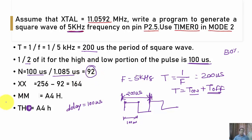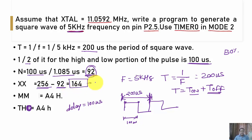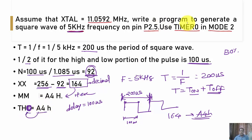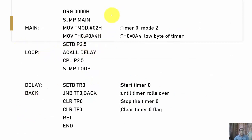Step 2: subtract N from 256 — 256 − 92 = 164 (decimal). Step 3: convert 164 decimal to hex — the result is A4h. This A4h is loaded into the higher 8 bits of Timer 0 (TH0) to generate the required 5 kHz frequency on P2.5.